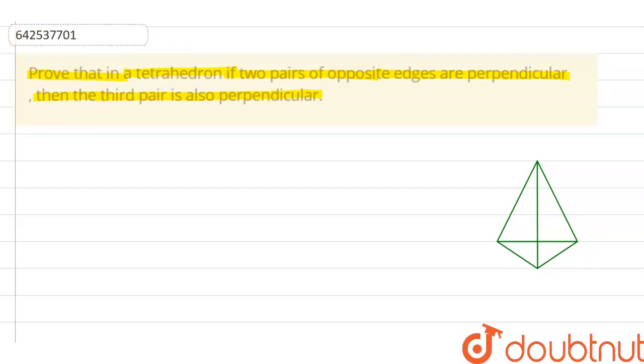For better understanding of this question, I have made a rough diagram. Here we have a tetrahedron with vertices A, B, C and D. This is our tetrahedron.